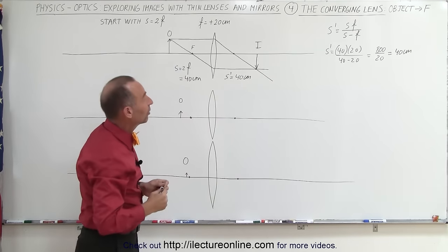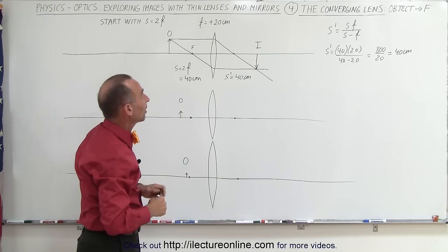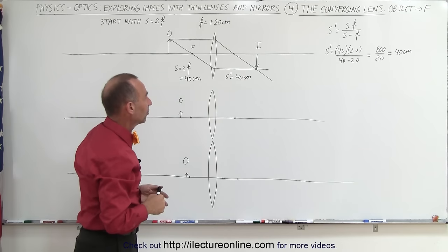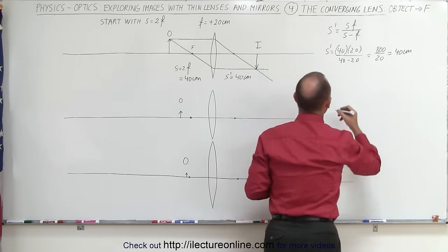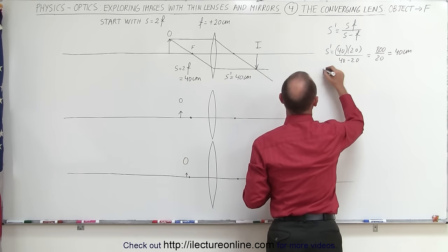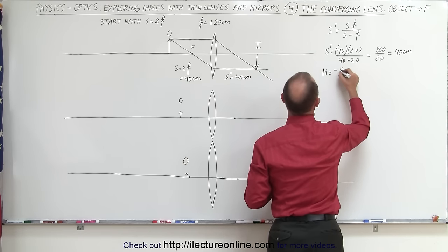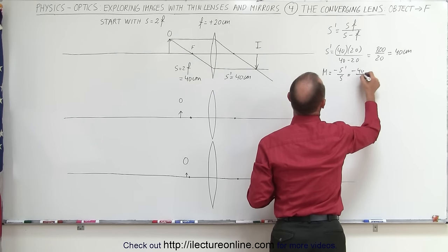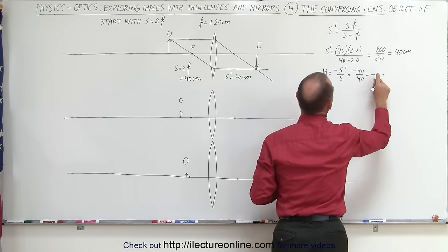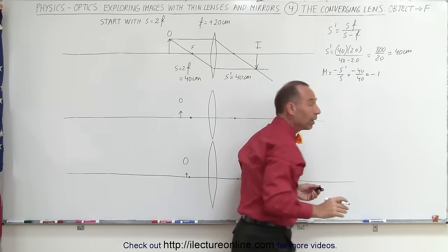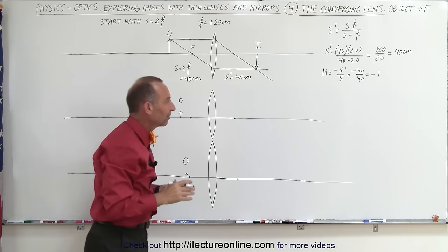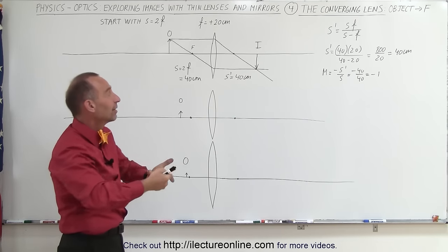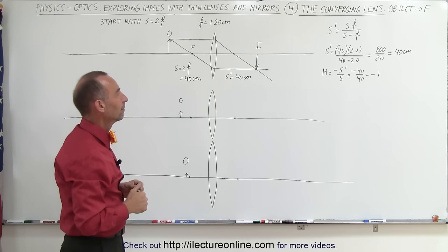The positive 40 centimeters means it's a real image on the other side of the lens. The magnification equals −S' / S = −40 / 40 = −1. A magnitude of 1 means the image size is exactly the same as the object size, and the negative means the image is upside down.